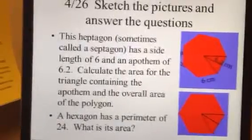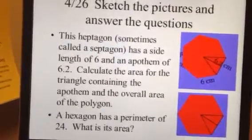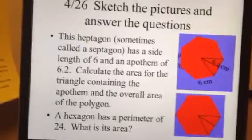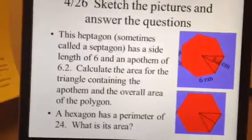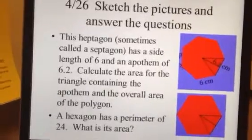But in the first one, you've got a heptagon, which is sometimes called a septagon. That's a seven-sided figure. Side length is six, and I'm telling you the apothem is 6.2. Once again, the apothem is the height of one of those little triangles that radiates out from the center. You need to calculate the area for that triangle, and then the overall area of the polygon.